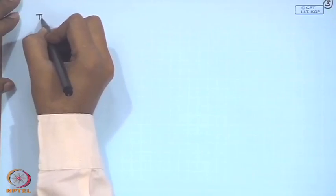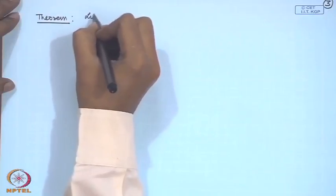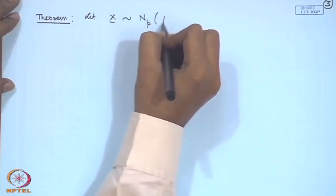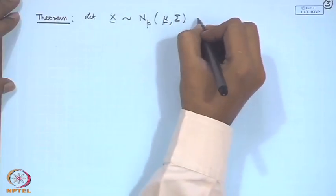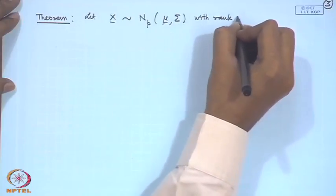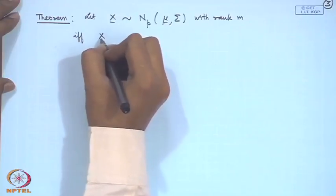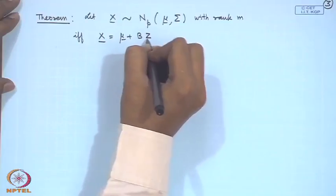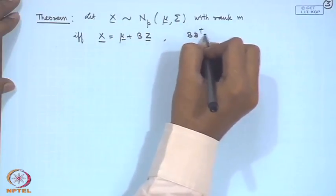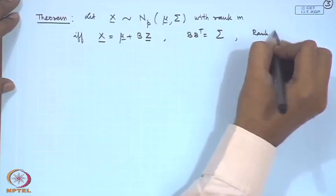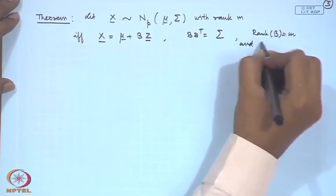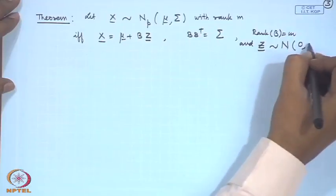Let us state a theorem: x follows a multivariate normal distribution Np(mu, sigma) with rank(sigma) = m if and only if x can be written as mu + B*z, where B*B' = sigma, rank(B) = m, and z is a vector of independent standard normal random variables.